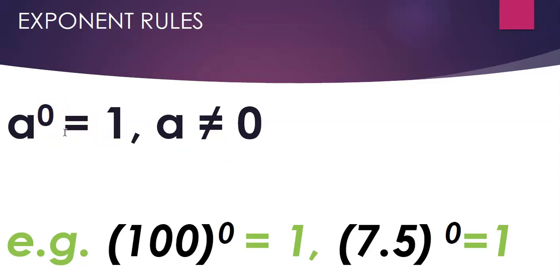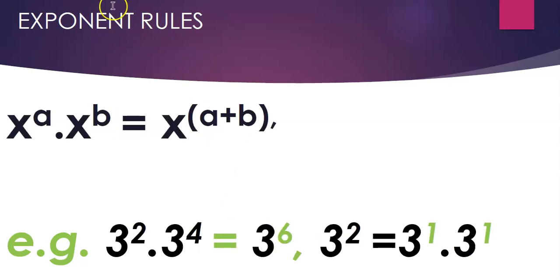Next up: any number except 0, when raised to the power of 0, equals 1. So 100 to the power of 0 is 1. Any non-zero number raised to the power 0 equals 1. Please note this — it's very important.